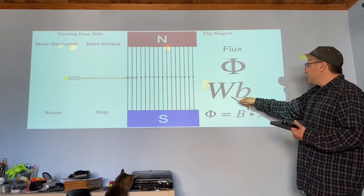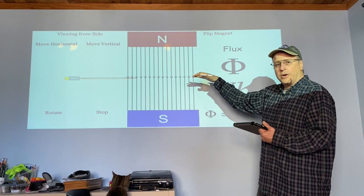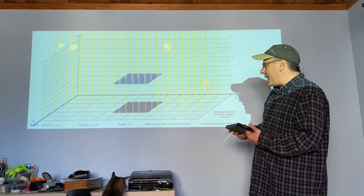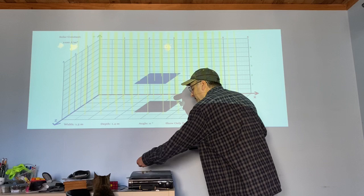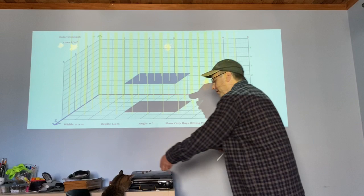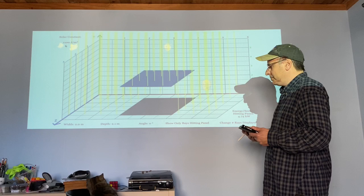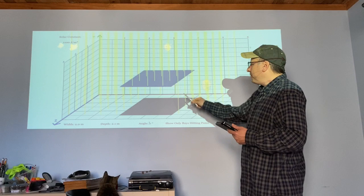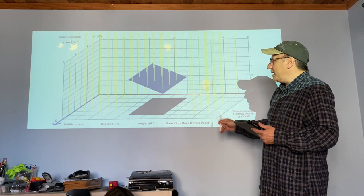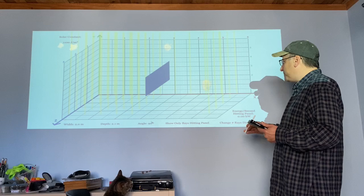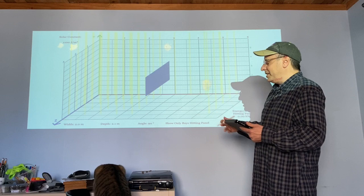We talked about flux, measured in Webers, which relates to the strength of the field, the area, and the orientation of the coil. We related it to a solar panel and saw that we could change the flux by making the solar panel bigger, changing the strength of the sunlight, or by rotating the solar panel. In summary, flux can be changed by changing the area, the field strength, or the angle.